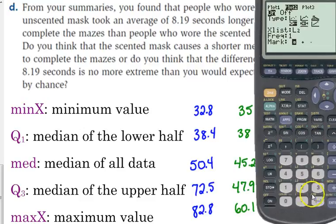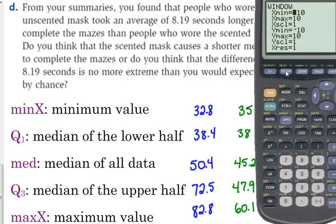Now, before we can press graph and expect to see it, we're going to have to fix our window. We're going to have to fix our window because it's not the way that it needs to be. Look at your minimum and maximum values, and that's part of the reason why we did the summary here. You want the x min to be less than your minimum value. The smallest minimum value was 32.8, so I'm going to go for 30. This is not an exact science.